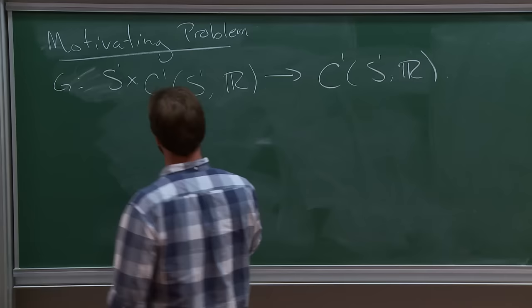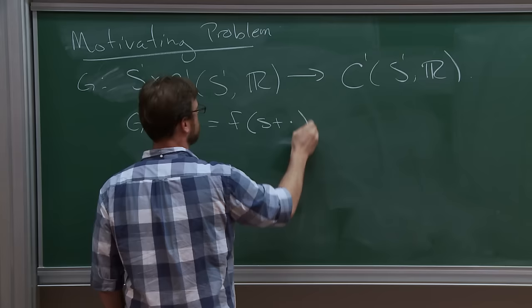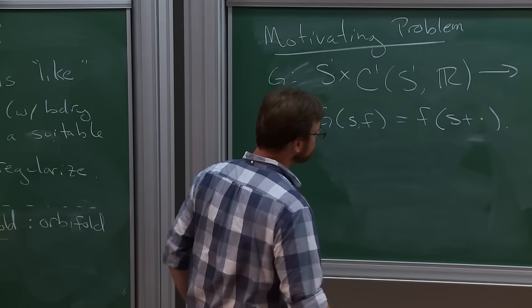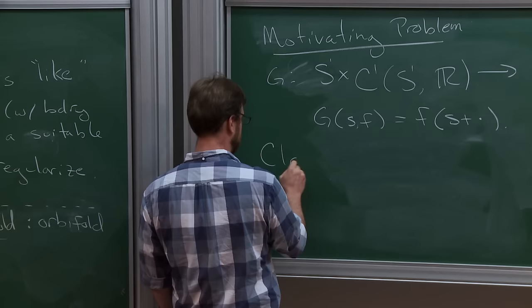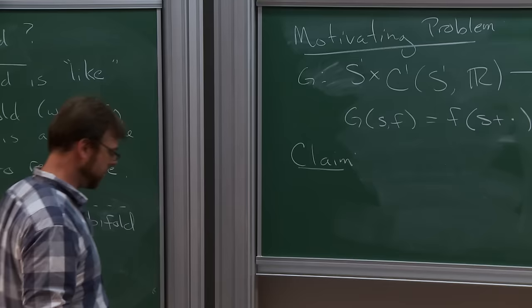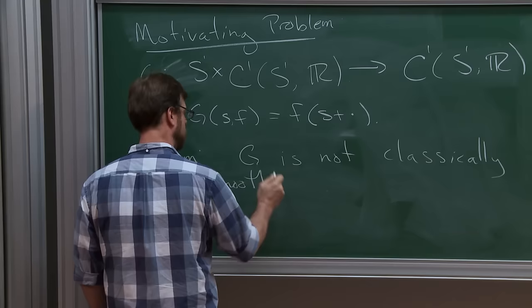Here's a motivating problem. We want to consider the continuously differentiable maps from the circle into the real line — real valued maps from S1. And I want to put a group action on this. I'm going to define this group action by saying that G applied to (S, F) is equal to F(S + whatever the input is). So it's essentially just a shift map in the domain of your function F — a reparameterization action. Claim: G is not classically smooth — it's not Fréchet differentiable, for instance.